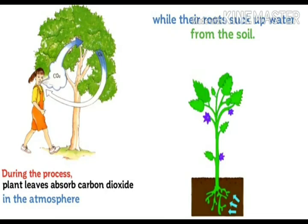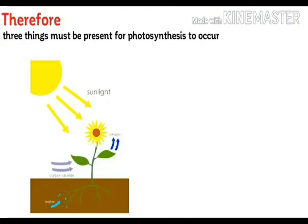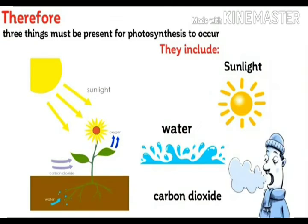They take water from the roots. During the process, plants release oxygen and absorb carbon dioxide from the atmosphere. Therefore, three things must be present for photosynthesis to occur: sunlight, carbon dioxide, and water. It liberates oxygen.